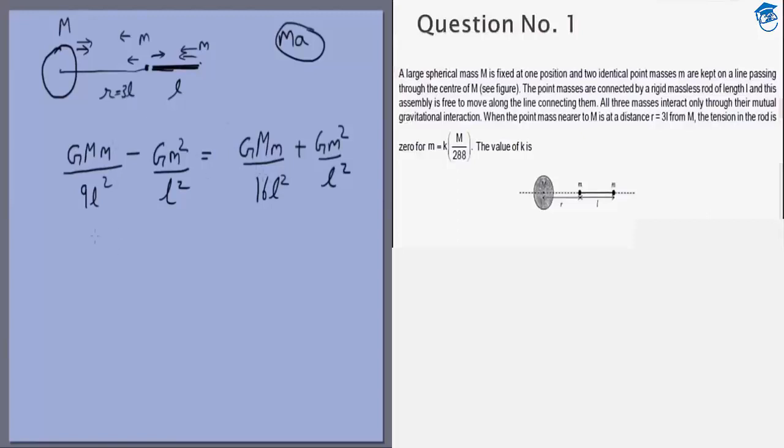We get this minus this, that means we get 7GMm by 16 times 9 that is 144 L squared, equals 2Gm squared by L squared. And from this we get small m equals 7 by 288 capital M. But we are given in the question that m equals K times M by 288, so our answer to this question is K equals 7.